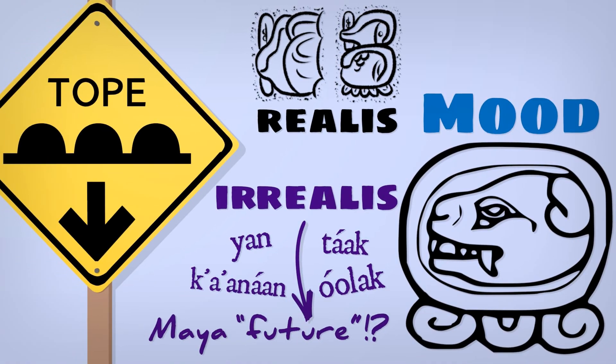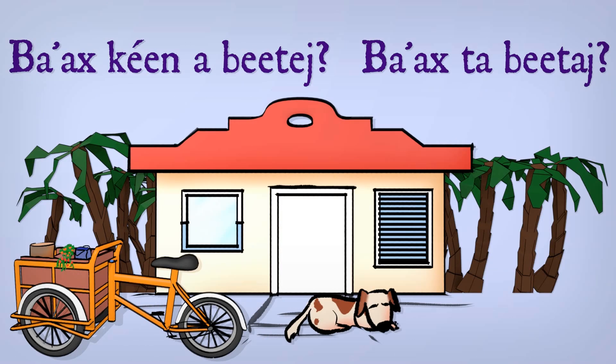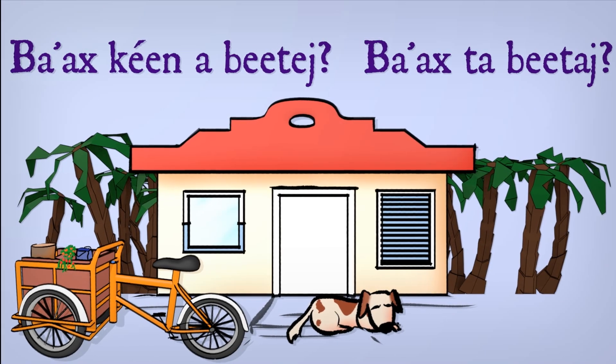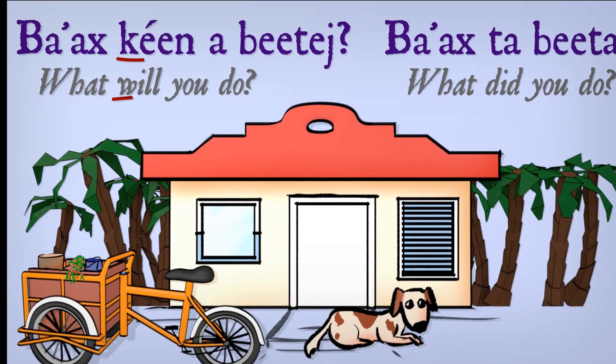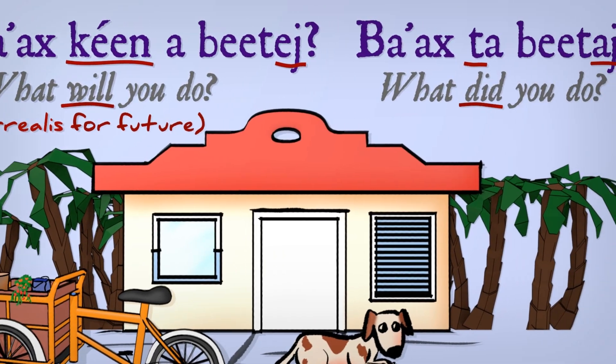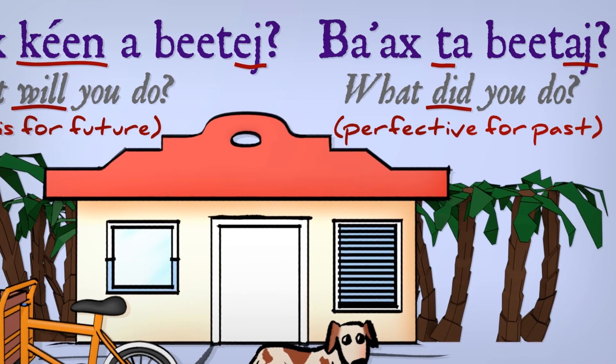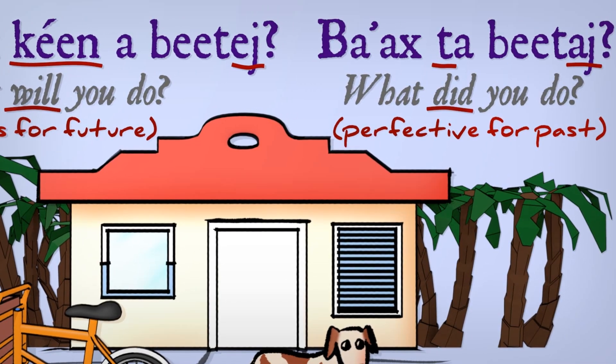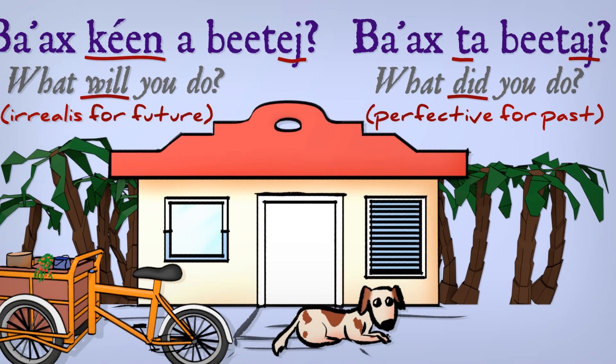So when I ask, baash kei na betech, the unreal action is easy to interpret as future. What will you do? Just like in baash ta betech, the perfective event inside topic is readily translated as in the past. What did you do?